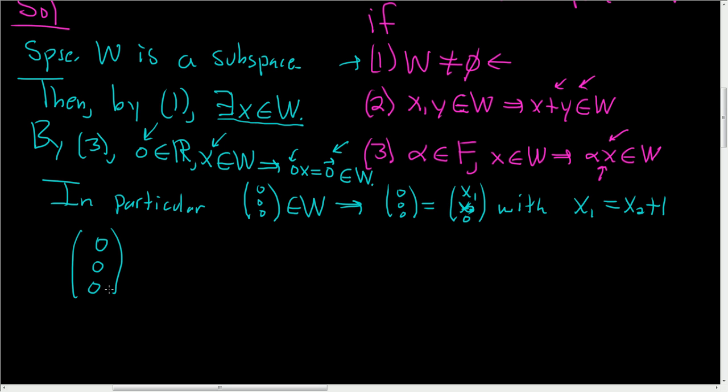So what does that mean? Well, let me write it one more time, it means that (0, 0, 0) is equal to (X1, X2, 0), and we have this condition here.